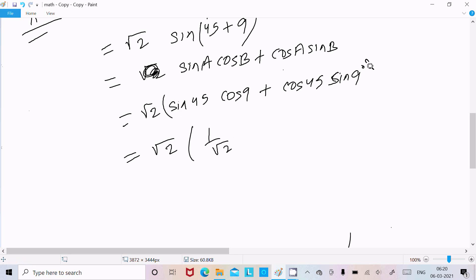So this √2 multiply with this all. Now here cos 9, here cos 45 value is 1/√2, here sin 9. So √2 is common between these two, so √2 common taken, here cos 9 + sin 9.